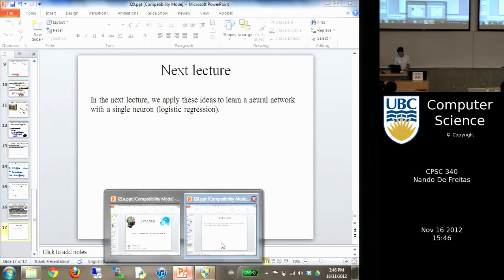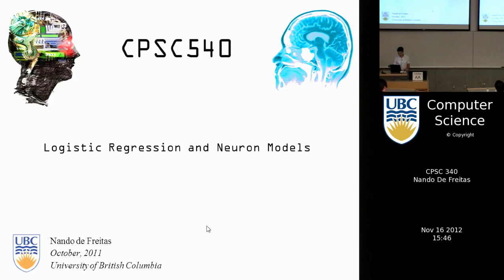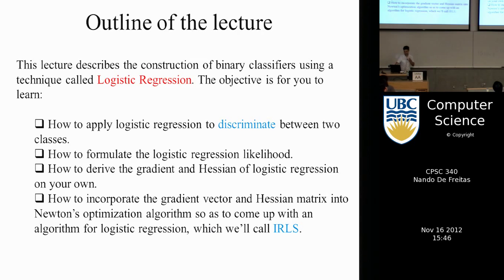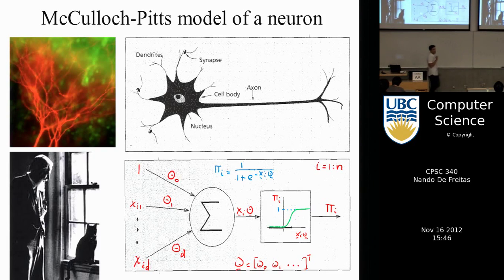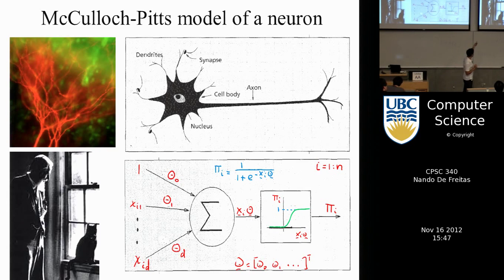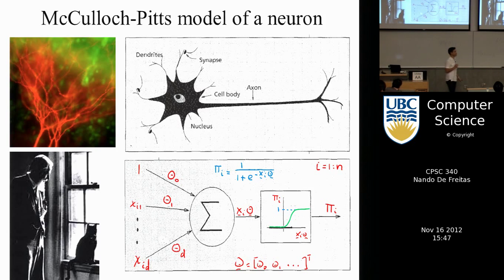Now I'm going to introduce logistic regression. I've shown you how to apply gradient descent and Newton's method to linear models; now I'll show you how to do that for a neural network with one neuron. A creature with one neuron is quite powerful. We'll use a very idealized model called the McCulloch-Pitts model of a neuron.